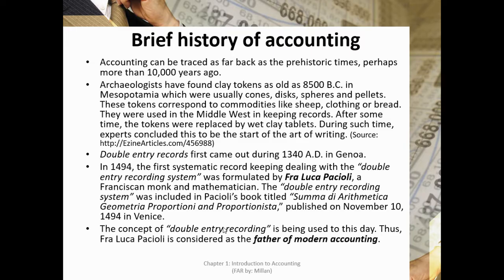In the Middle Ages, during the 13th and 15th centuries, trade flourished in places such as Florence, Venice, and Genoa, bringing advancements in account-keeping methods. In 1211 AD, one of the systems of accounting was kept by a Florentine banker. However, the system was primitive as the concept of equality for entries was absent. Double-entry records first appeared in 1340 AD in Genoa.